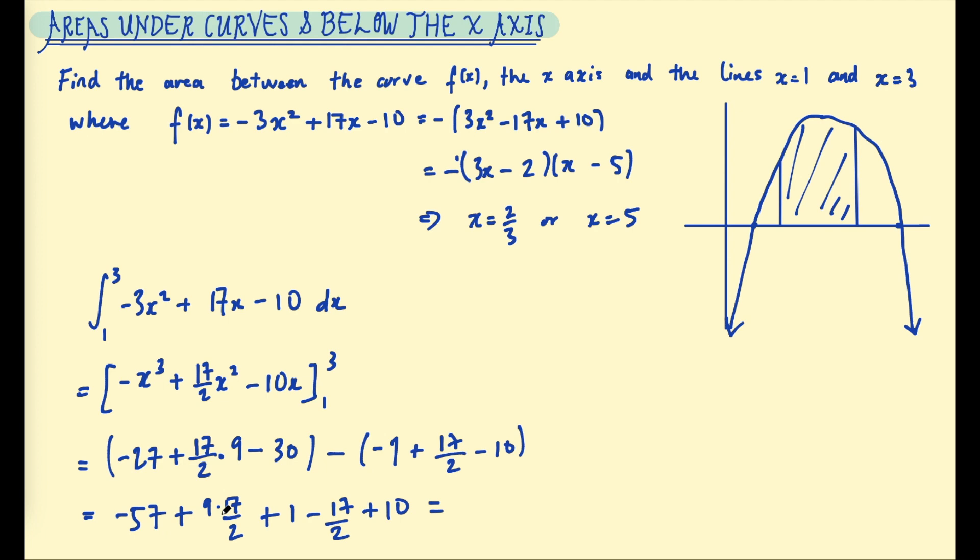Remember to distribute that negative to all of the terms. And then if you subtract 17/2 from 9 lots of 17/2, you get 8 lots of 17/2, and you add the constants, you get negative 46 plus 8 lots of 17/2. Then the 8 cancels with the 2, and you get rid of the fractions. Then you work that out, and you get 22. So that's your final answer there for that area between 1 and 3, underneath that function.